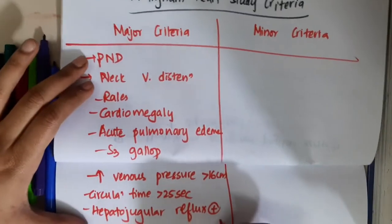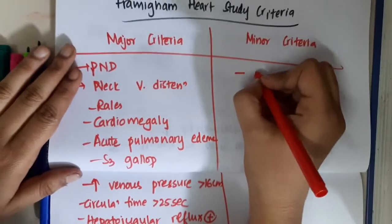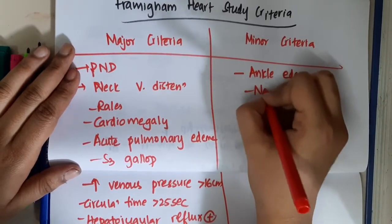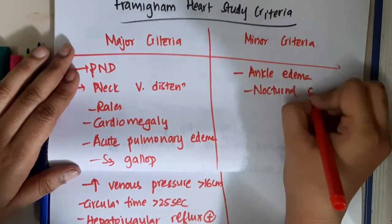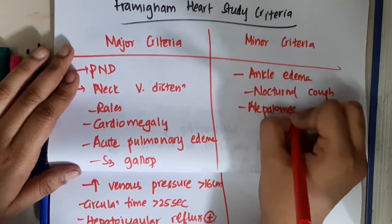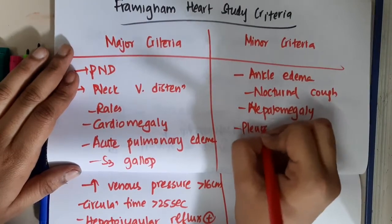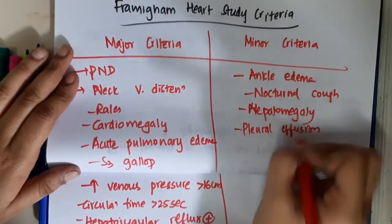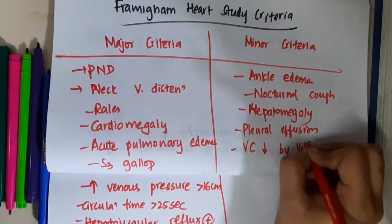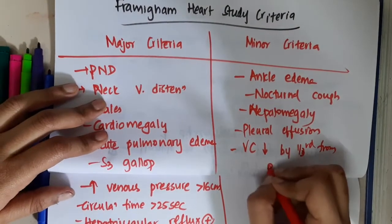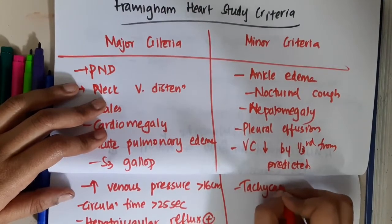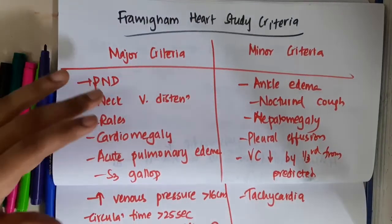One more major criterion is positive hepatojugular reflux. The minor criteria include ankle edema, nocturnal cough, hepatomegaly, pleural effusion, vital capacity reduced by one third from predicted, and tachycardia.